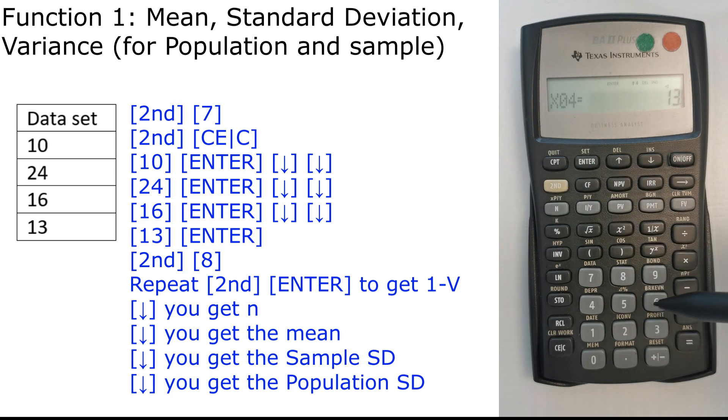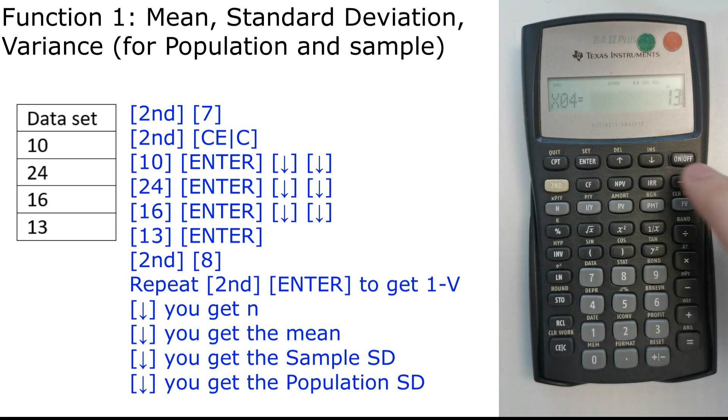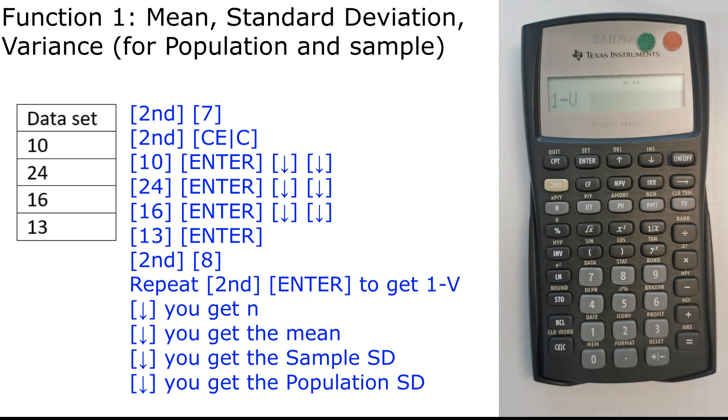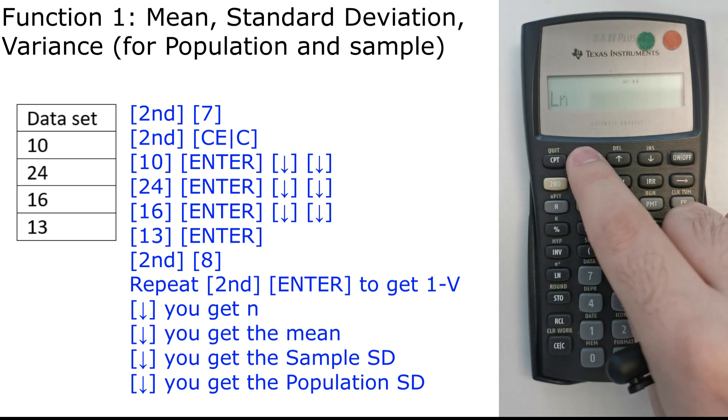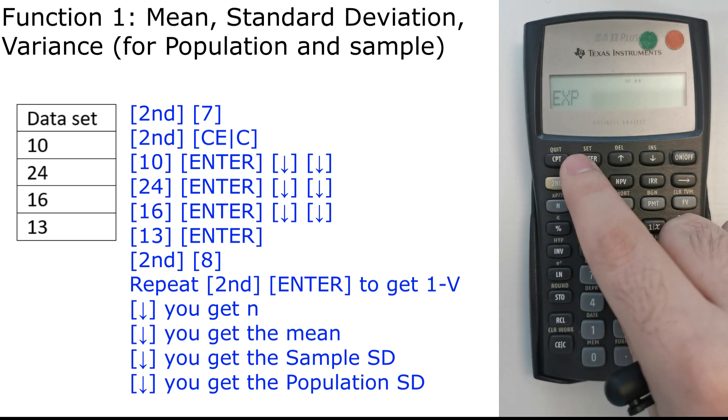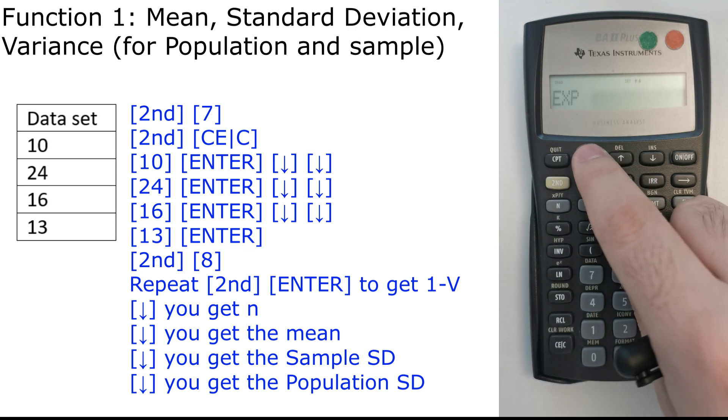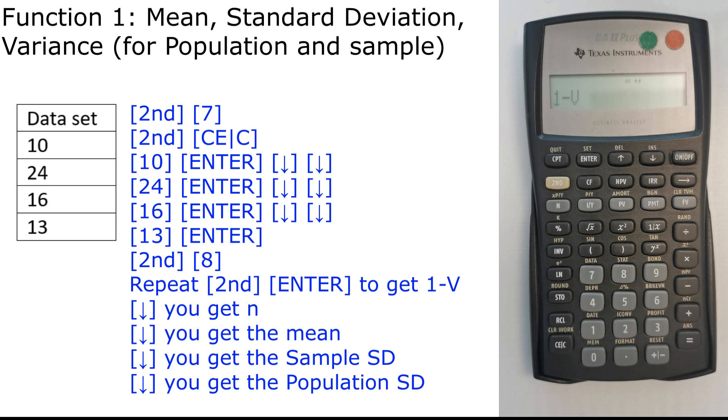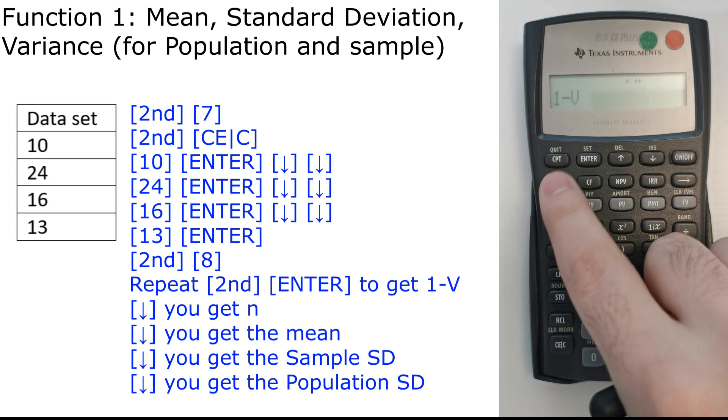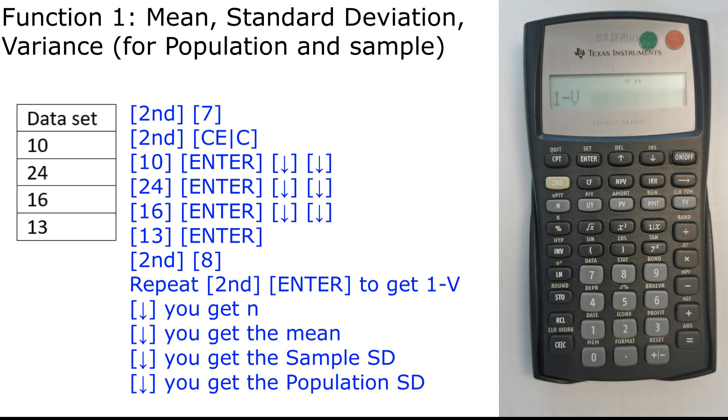Then we press 2nd, statistic as 8. So then we press 2nd, 8. I have it as 1 variable. But if you have it different than 1 variable, you should press 2nd, enter to change it from ln to ln to exponential power to get it as 1 variable. Then we press downwards. We have n which is equal to 4.